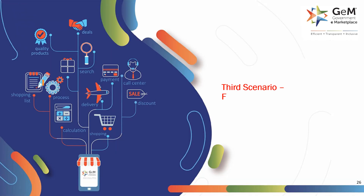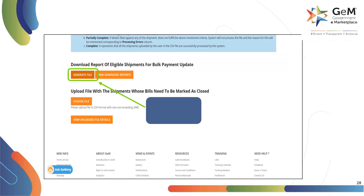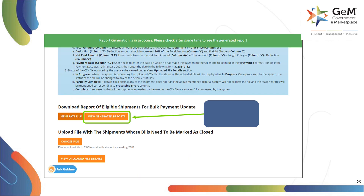Third scenario: for shipments where no invoice is generated by the seller. Click on bulk payment update invoice not issued to process the payment of the invoice not issued shipments. Click on generate file to create the pending payment report. Click on view generated reports to view and download the generated report.